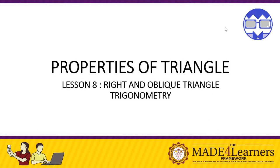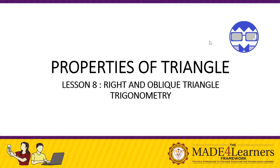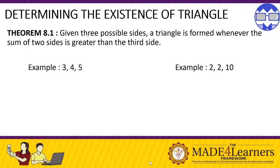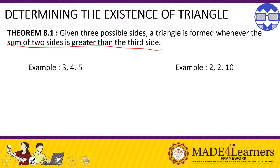In this video we are going to determine the properties of a triangle — what can we say that a triangle exists, and how to determine the type of triangle given its sides. So let's have this theorem: Theorem 8.1 states that given three possible sides, a triangle is formed whenever the sum of two sides is greater than the third side.